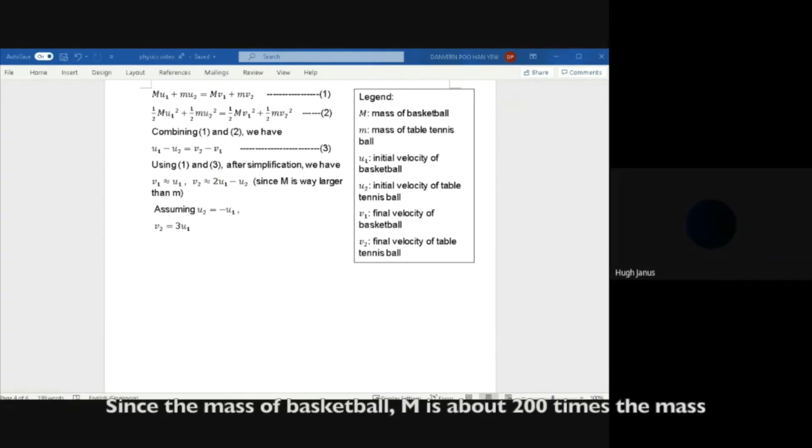Since the mass of the basketball, capital M, is about 200 times the mass of the table tennis ball, small letter m, hence the following equations can be simplified to get v2 equals 3u1, a factor of 3 increase in speed. Thus it reaches a greater height. This can also be expressed in the diagram shown.